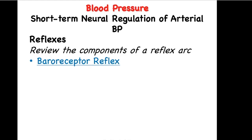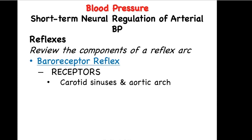Baroreceptors are mechano or stretch receptors and they monitor blood pressure. The main baroreceptors are located within the carotid sinuses and the aortic arch. The stimuli for the baroreceptors is an increase in blood pressure. Remember, these are stretch receptors. Blood pushing up against the walls of the vessel is what creates your blood pressure. As the volume of blood increases, this will stretch the receptors further, acting as a stimulus.